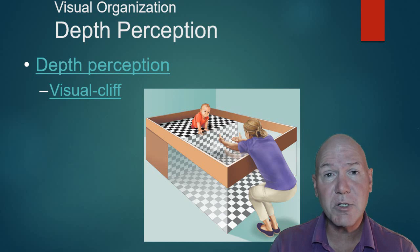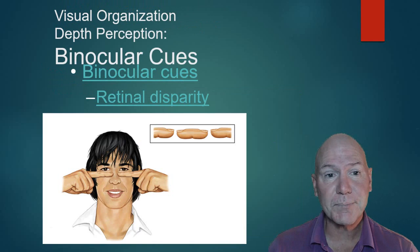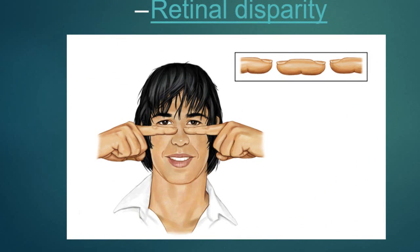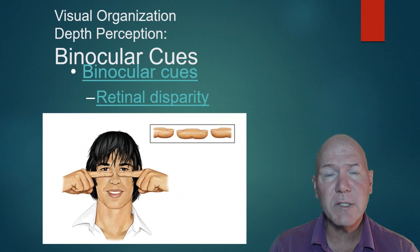Those of us with two good eyes, one of the cues we depend on is a binocular cue—bi meaning two, ocular meaning eyes. So you use both eyes for this. If you put your fingers up, you'll notice a little sausage finger in the middle as you look past it and focus on the wall.